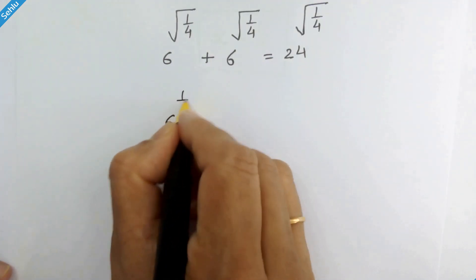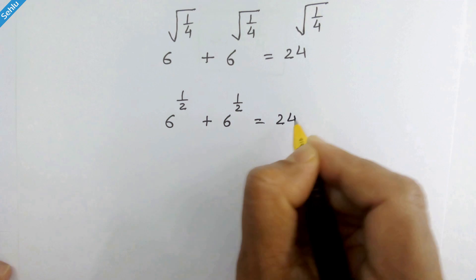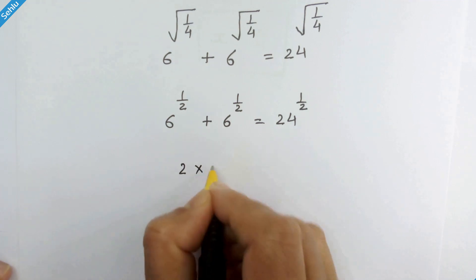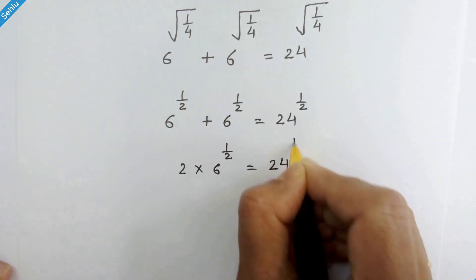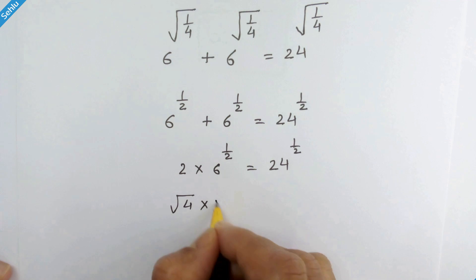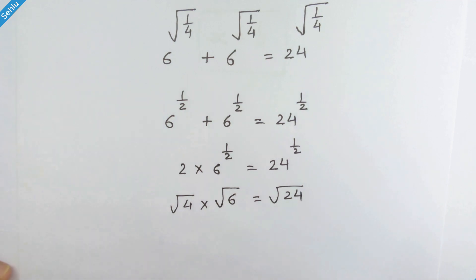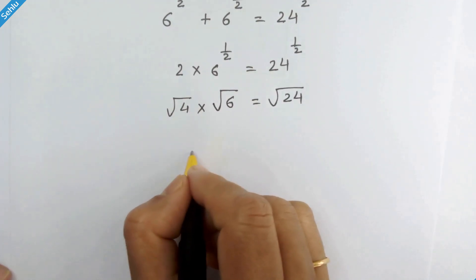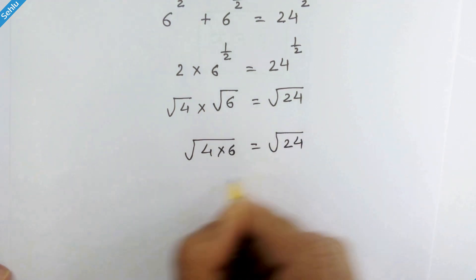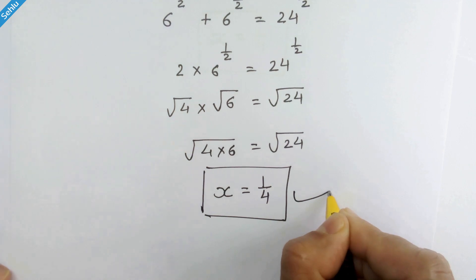So we can write 6 raised to 1 upon 2 plus 6 raised to 1 upon 2, which gives 2 times 6 raised to 1 upon 2. Now 2 can be written as square root of 4, and 6 raised to 1 upon 2 can be written as square root of 6. This gives square root of 4 times 6, which equals square root of 24. So x equal to 1 upon 4 is the correct answer.